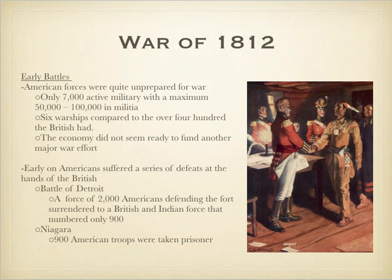The War of 1812 does not start off very good at all for the Americans. At the time, we only have 7,000 men in our military and about another 50,000 to 100,000 in militia, and that pales in comparison to what the British have. We only have six naval warships while the British fleet has over 400, and our economy still really wasn't that strong. So things do not start out well for us.